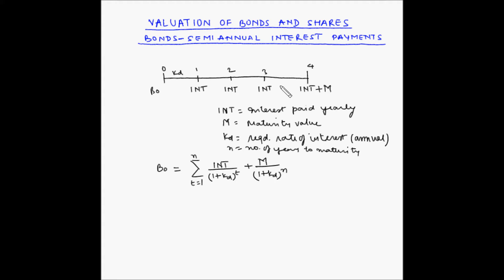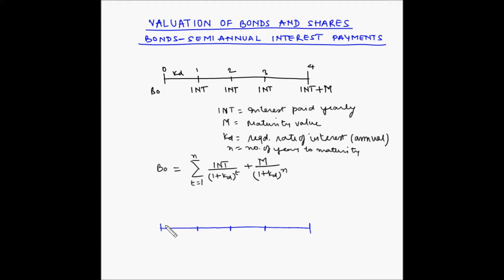In this case N is 4. Now let's take the case of semi-annual interest payments. The total tenure is still 4 years, so we mark 4 sections: 1, 2, 3, 4. However, since this is semi-annual, interest is being paid every 6 months.